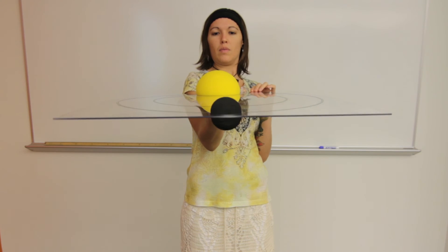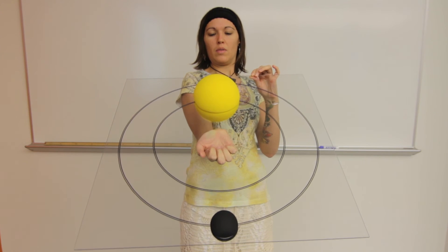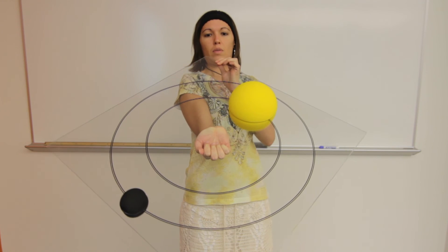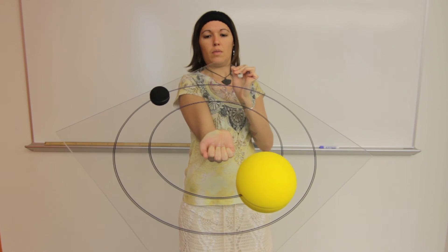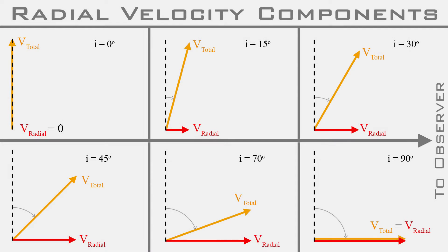Do minor deviations from ninety degrees affect your ability to detect extrasolar planets by radial velocity methods? As you slowly decrease the inclination, the component of velocity toward and away from you gets smaller, making the planet more difficult to detect. But as long as the inclination is not zero degrees, you still have some chance — it is certainly more likely at inclinations closer to ninety degrees.